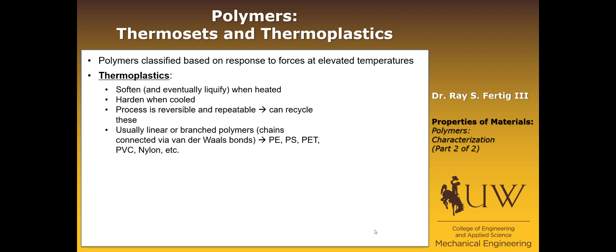These thermoplastics are usually linear or branched polymers, and the reason that they behave this way is because the heat just allows those van der Waals bonds that are bonding the chains together to break. And so they can move around like a liquid, and then if we cool them down, they'll reform and form into whatever structure we want. So typical examples of these would be polyethylene, polystyrene, and these others that I'm showing you here.